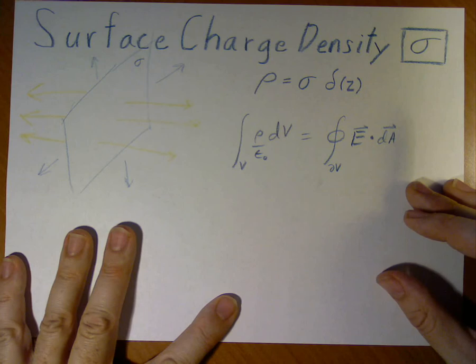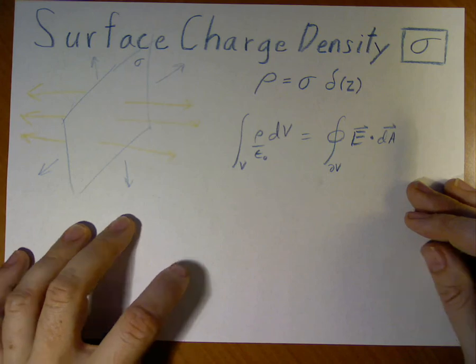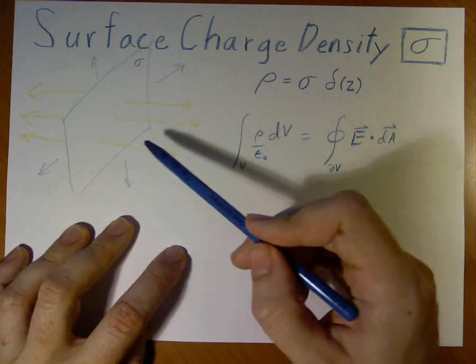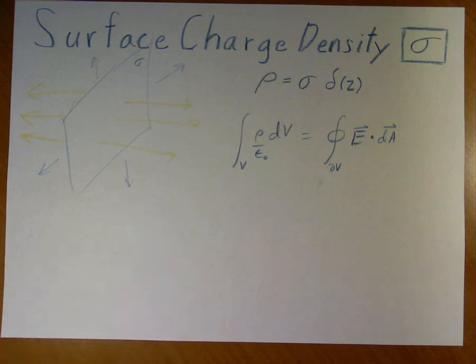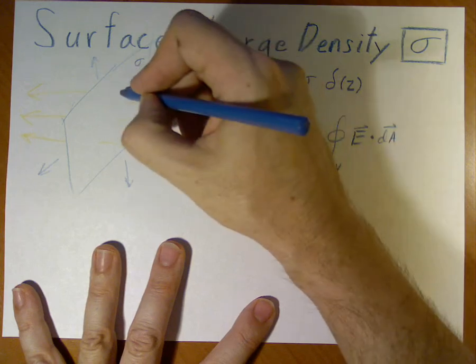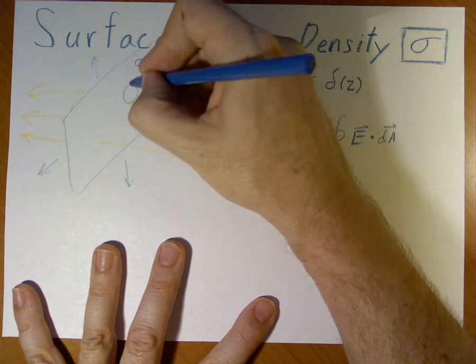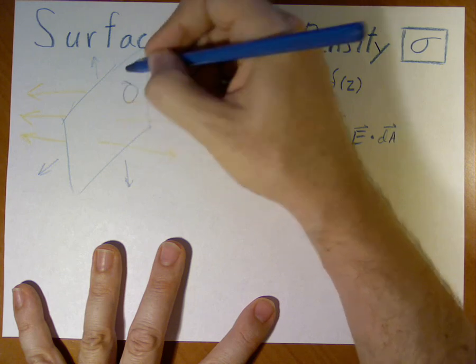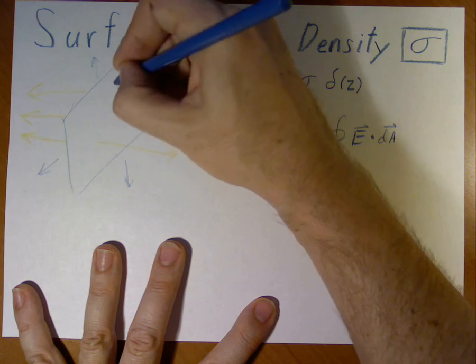Now, the real trick in solving these problems is determining the correct Gaussian surface to use. In this problem, we have a wide variety, freedom in picking the kind of Gaussian surface. I'm going to pick a simple one, just a circle, pillbox we call it, as long as it goes out on the other side.